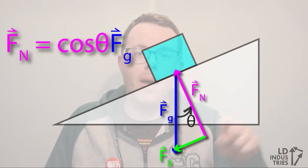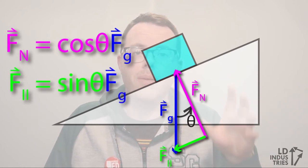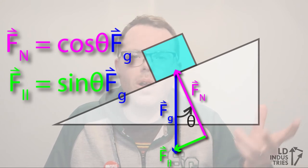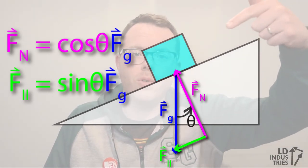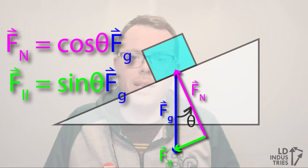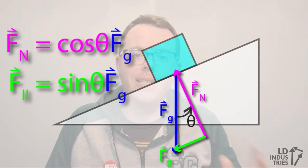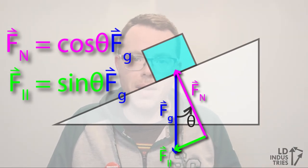I can also find the opposite side of the triangle, which is called the parallel force. We call it that because it's the force of gravity parallel to the incline. And I can find that by taking the sine of the angle of incline and multiplying by the force of gravity.